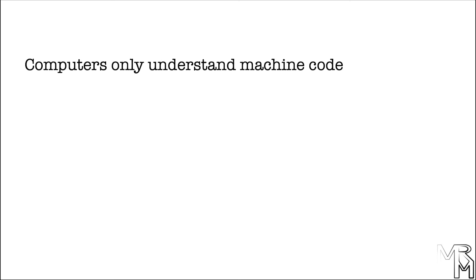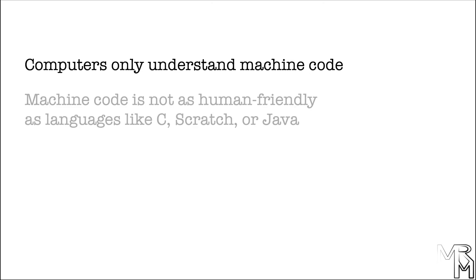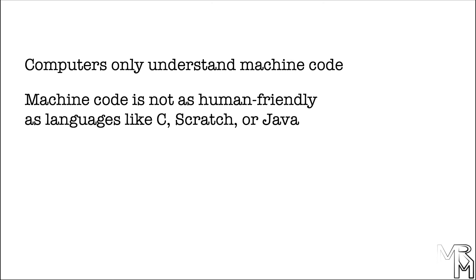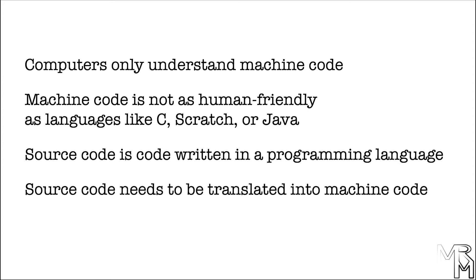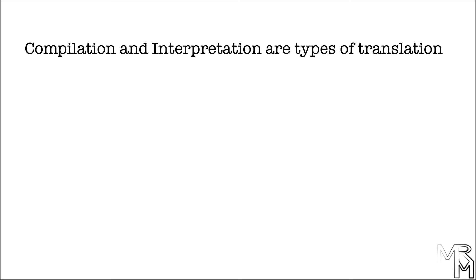Now let's summarize what we have covered in this video so far. The only language computers understand is machine code, a sequence of ones and zeros. Machine code is not a very human-friendly language. Programming languages like C, Scratch, or Java are more human-friendly. The code written in a programming language is called source code. Because computers don't understand source code, it needs to be converted to machine code before the computer can execute it. The process of conversion of source code to machine code is called translation. There are two types of translation: compilation and interpretation.